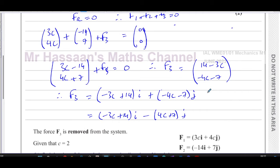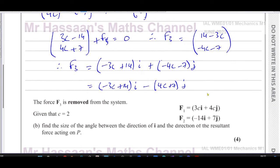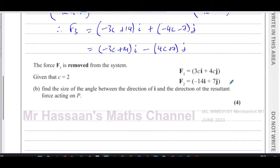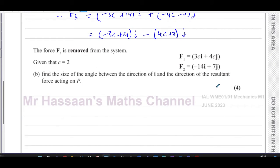Now part B says the force F3 is removed from the system. Given that c equals 2, find the size of the angle between the direction of i and the direction of the resultant force acting on P. So the resultant force now is going to be just F1 plus F2.